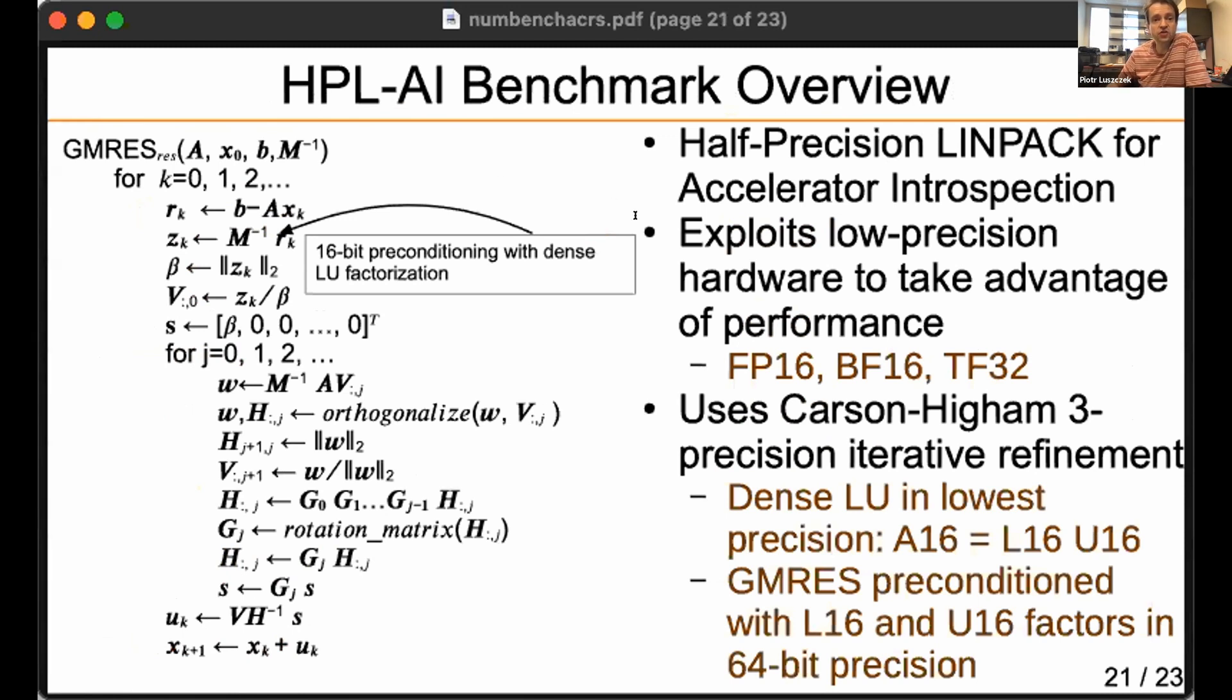The way to use that is similar work by Aaron Carson and Nick Higham - three precision iterative refinement where we use GMRES. It uses 16-bit preconditioning and 16-bit LU factors that precondition the iterative process. If we look at this preconditioner, we can utilize these different mixed precisions as long as we take care of proper scaling. Looking at Jim Demmel's work, try not to propagate the bad values and take care of the limited range of these values.